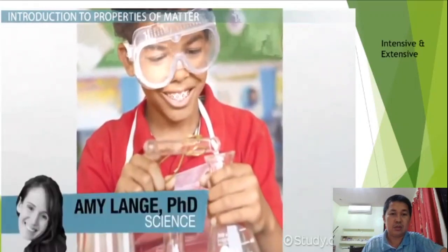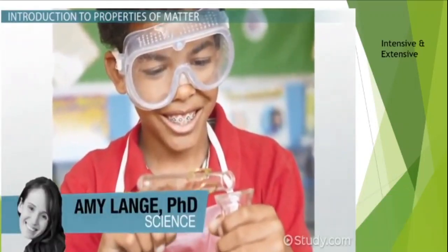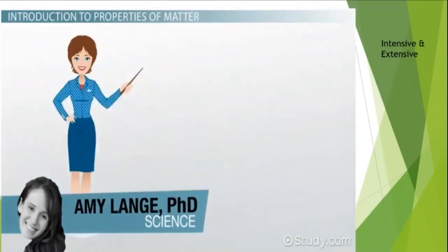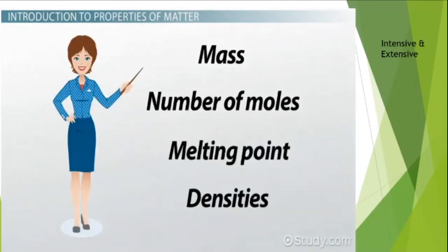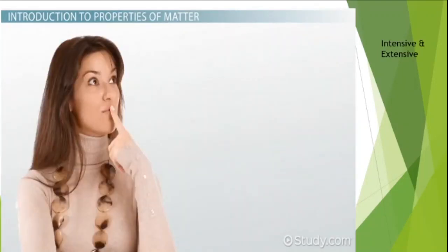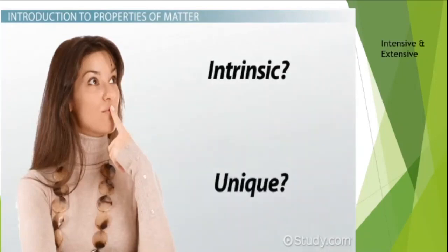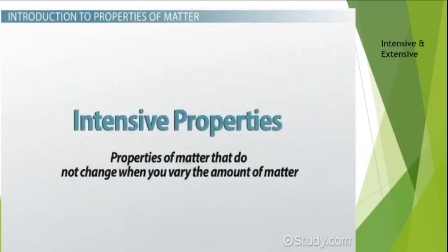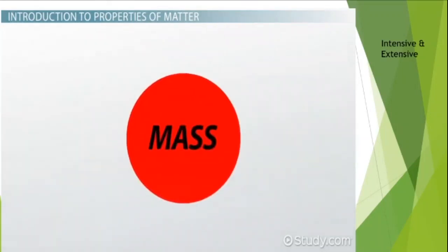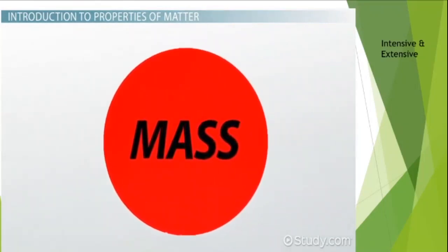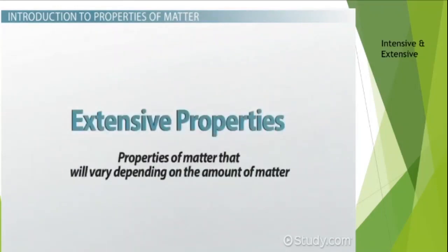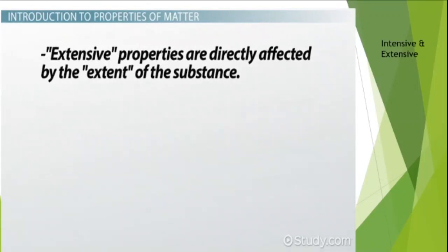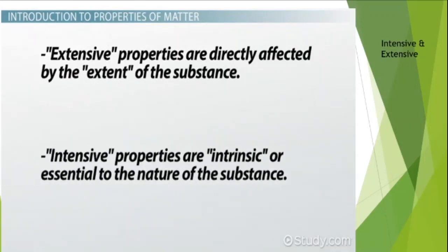Chemistry has many properties used to define matter — mass, number of moles, melting point, densities, and several other variables that affect the system being studied. Some properties are more intrinsic or unique to a specific substance; these are known as intensive properties. Intensive properties do not change when you vary the amount of matter. Other properties, such as mass, will vary depending on the amount of matter — these are called extensive properties. Extensive properties are directly affected by the extent of the substance, while intensive properties are more intrinsic or essential to the nature of the substance.